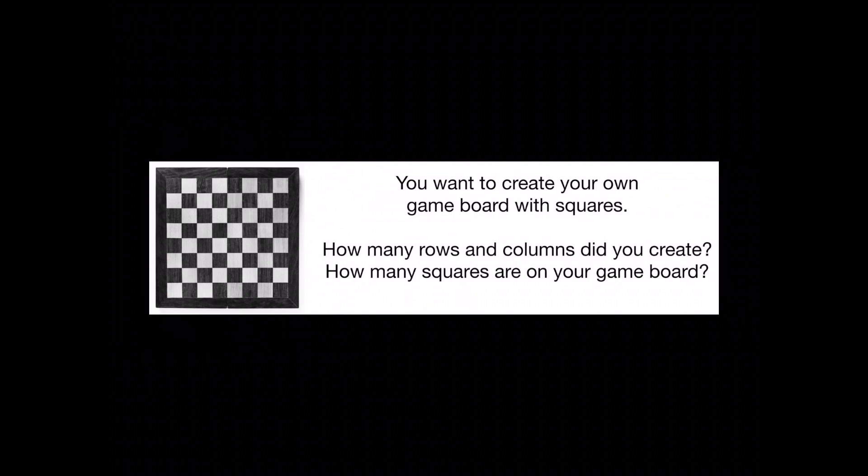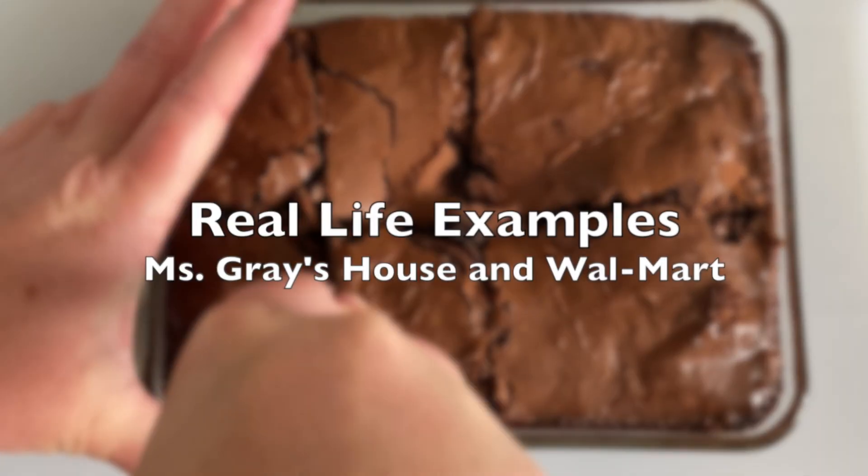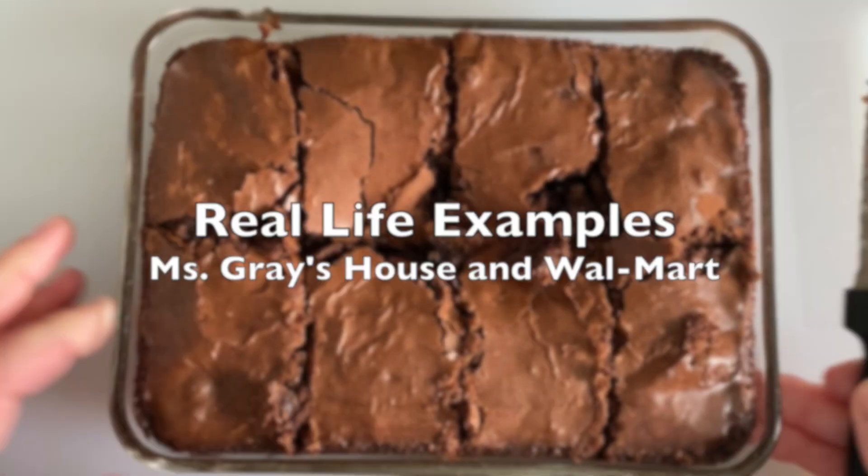Now you get to create your own game board with squares. How many rows and columns did you create? How many squares are on your game board? Draw a rectangle and decide how many rows and columns your game board has, then figure out the total number of squares. Where do you see rectangles composed of squares in real life? We're going to make some brownies and partition the brownie pan and other foods into equal rows and equal columns.